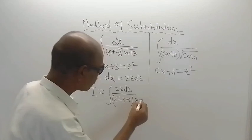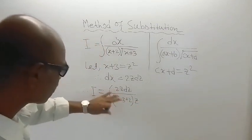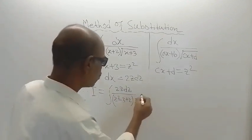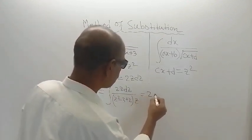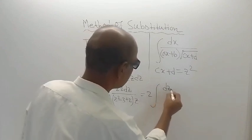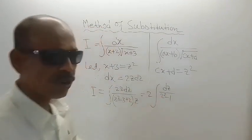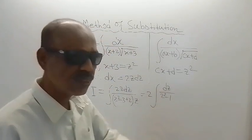So this z and this z are cancelled. These two is a constant, this can be taken outside the integral. So therefore this can be written as 2 into integration of dz divided by z square minus 1. And formula for this is known to you.